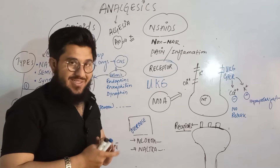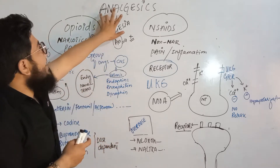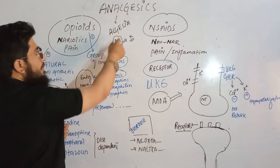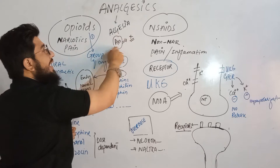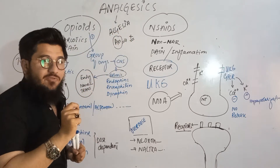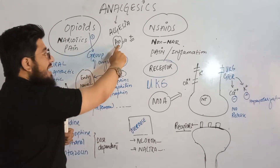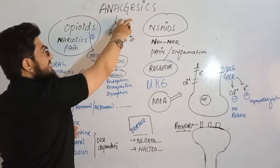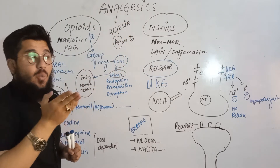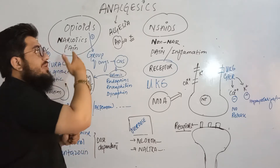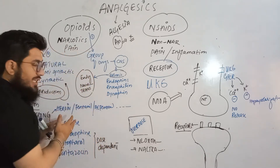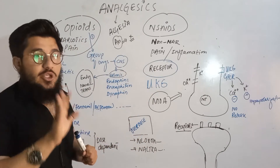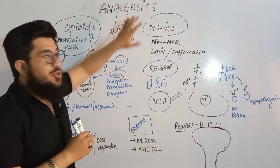The term analgesics is composed of two parts: 'algesia' and 'an'. Algesia means pain, and 'an' means without or no. When combined, analgesics means 'without pain' or 'no pain'. So this term is used for the drugs we use to alleviate or relieve pain.